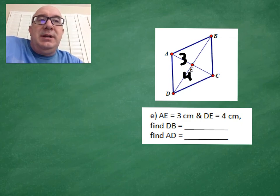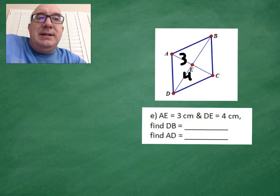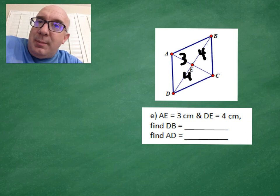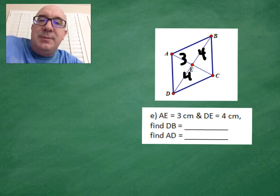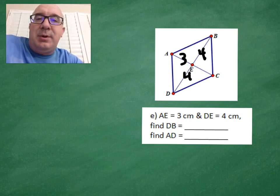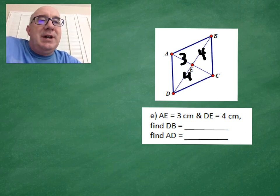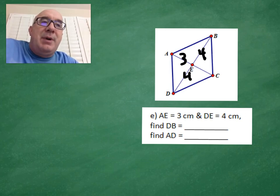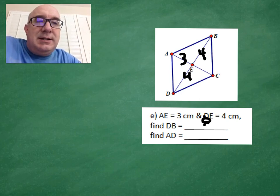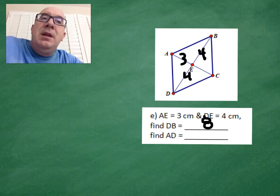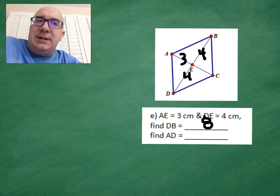They want to know BD. That's an easy one — we know that a rhombus is a type of parallelogram, so it has the property of diagonals bisecting each other. So that's a nice, easy eight.